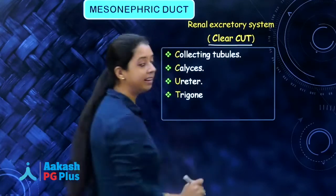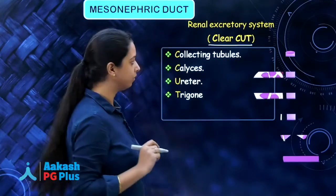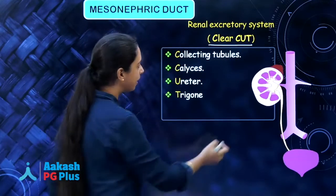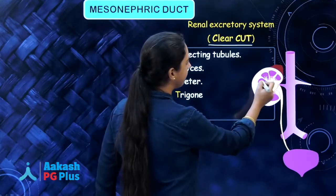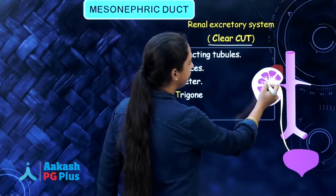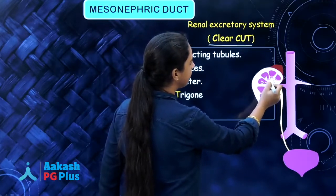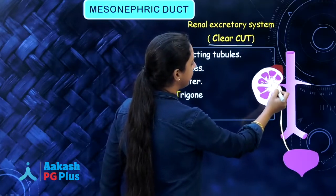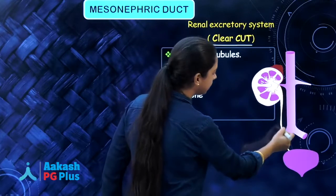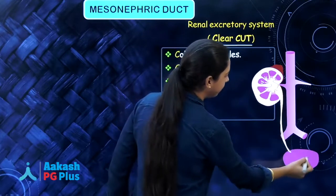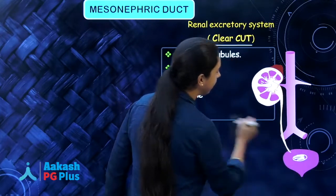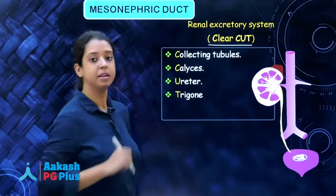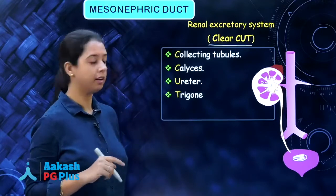Remember that clearly. The mesonephric duct forms the collecting tubule, then the calyces, then the ureter, and then the trigone of the bladder. All of these are formed by the mesonephric duct.